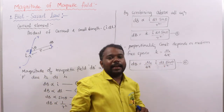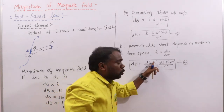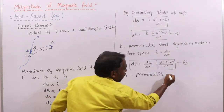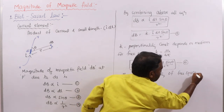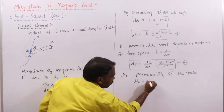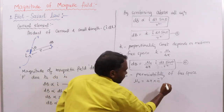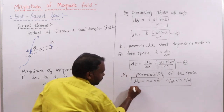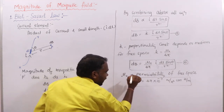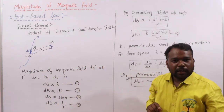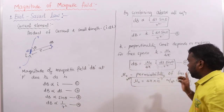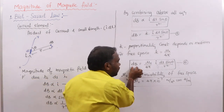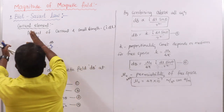This is the magnitude of magnetic field as given by Biot-Savart Law: dB = (μ₀/4π) · I·dL·sine theta / r². Here μ₀ is a new constant referred to as the permeability of free space. Its value is 4π × 10⁻⁷ newton per ampere squared, or henry per meter. This is the most important constant in electromagnetism, analogous to ε₀ in electrostatics.